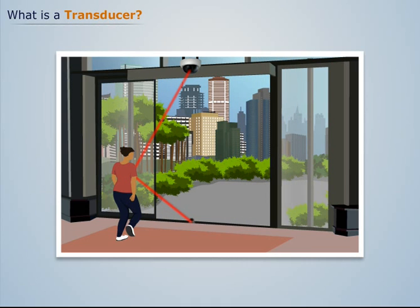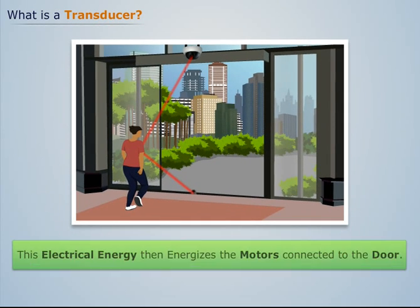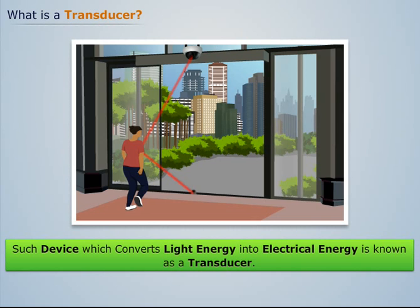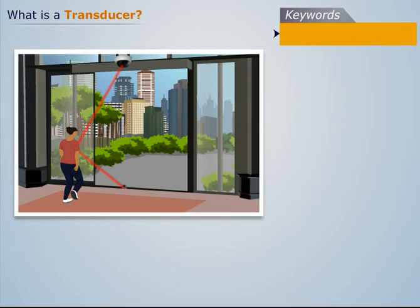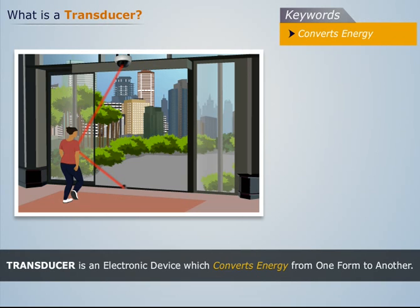The reflected rays are then received by a device which converts them into electrical energy. This electrical energy then energizes the motors connected to the door, thus opening the door automatically. Such a device which converts light energy into electrical energy is known as a transducer. Thus we can say that a transducer is an electronic device which converts energy from one form to another.